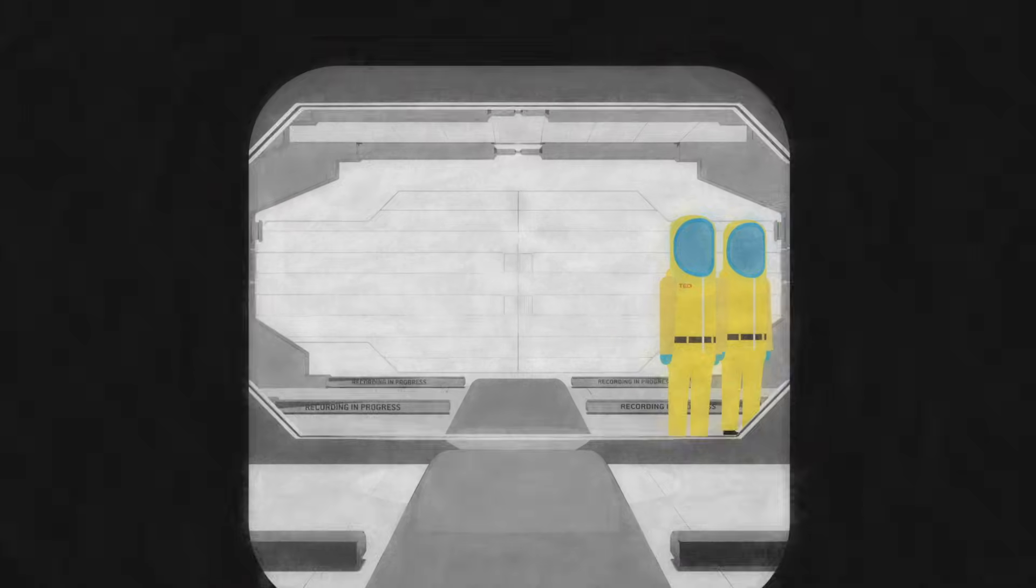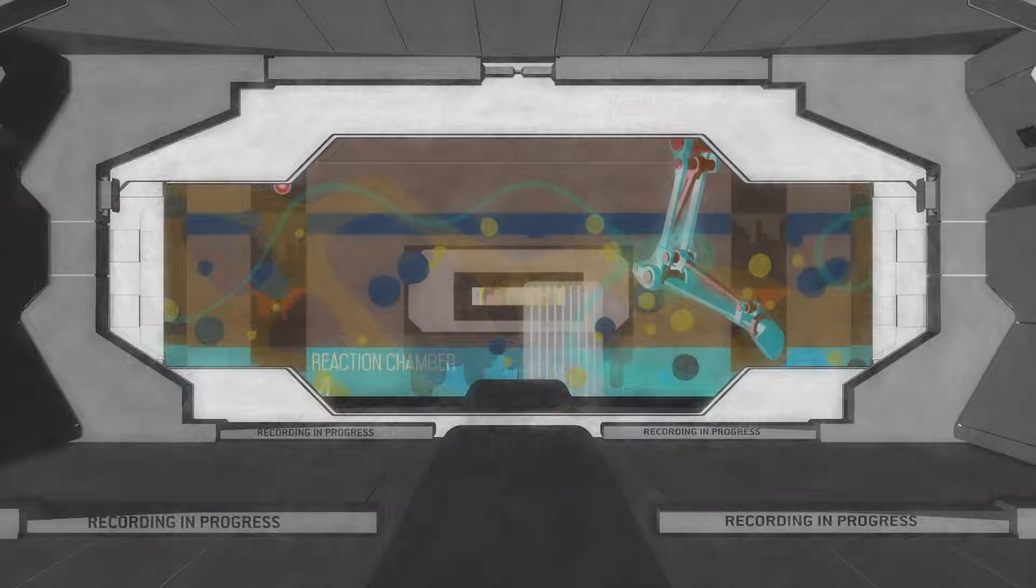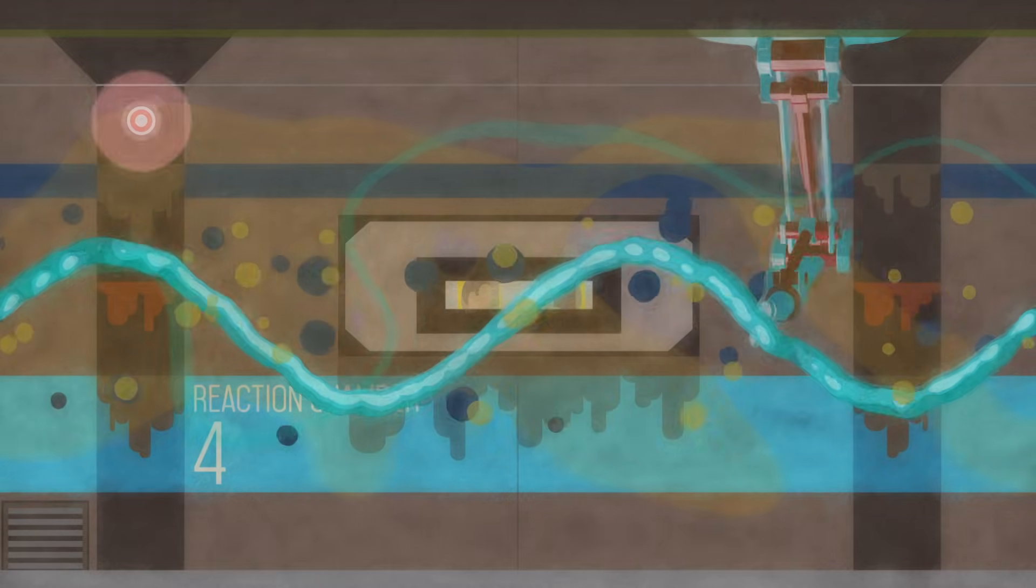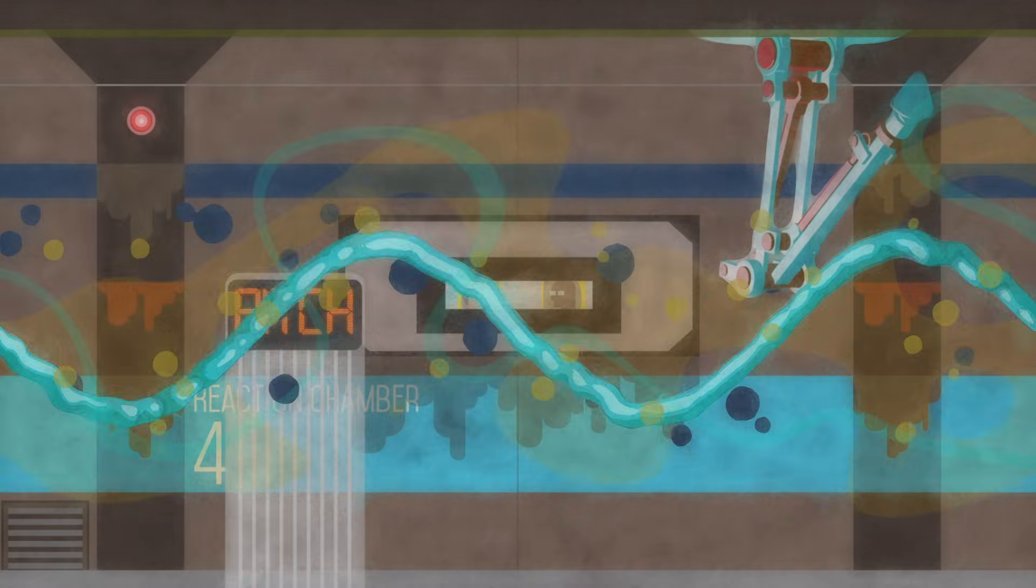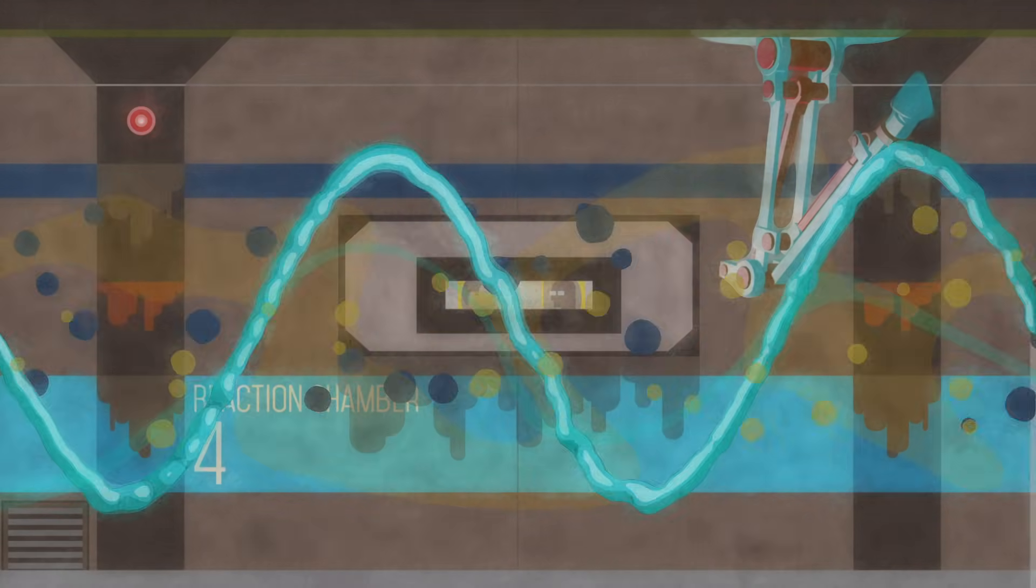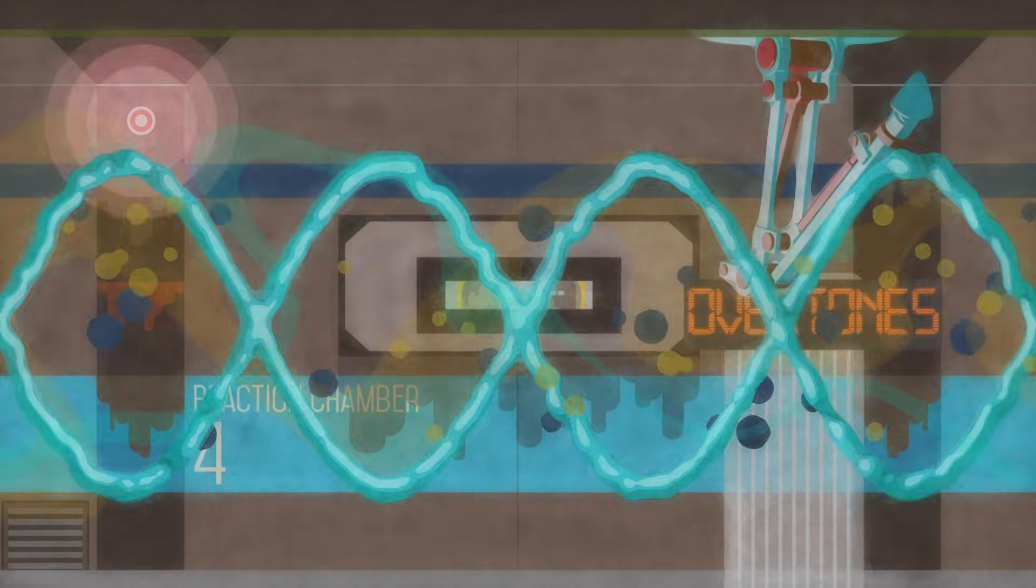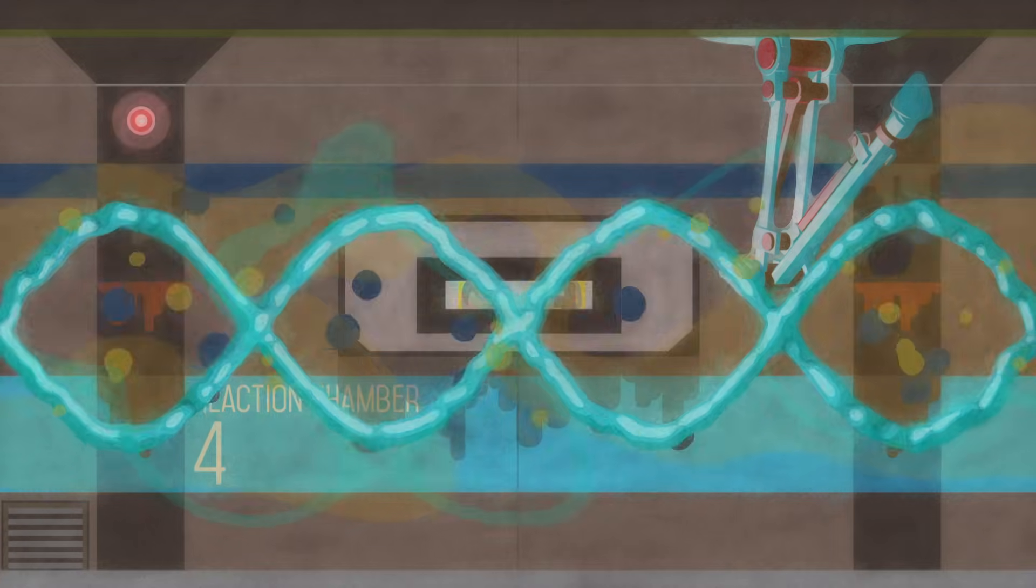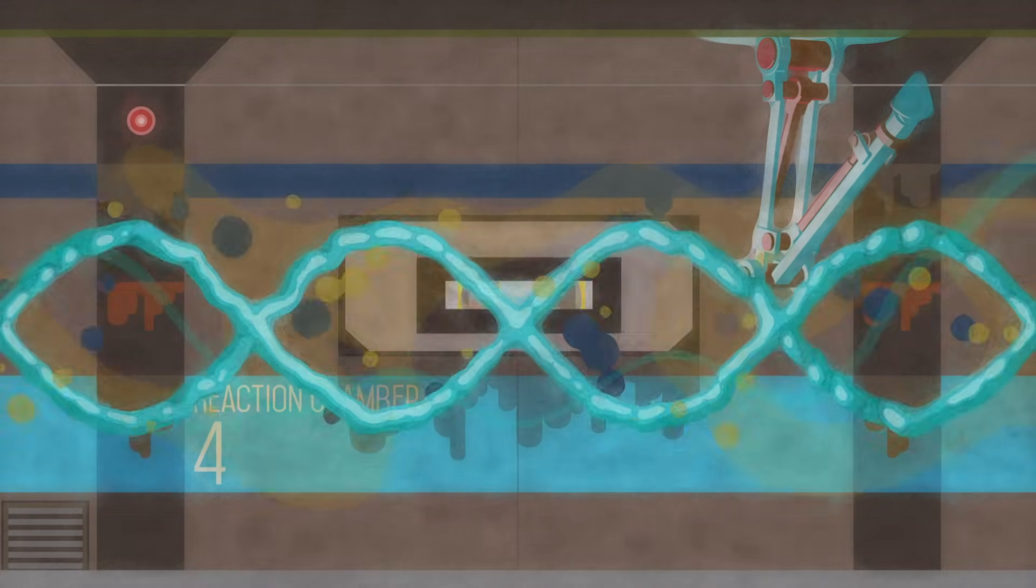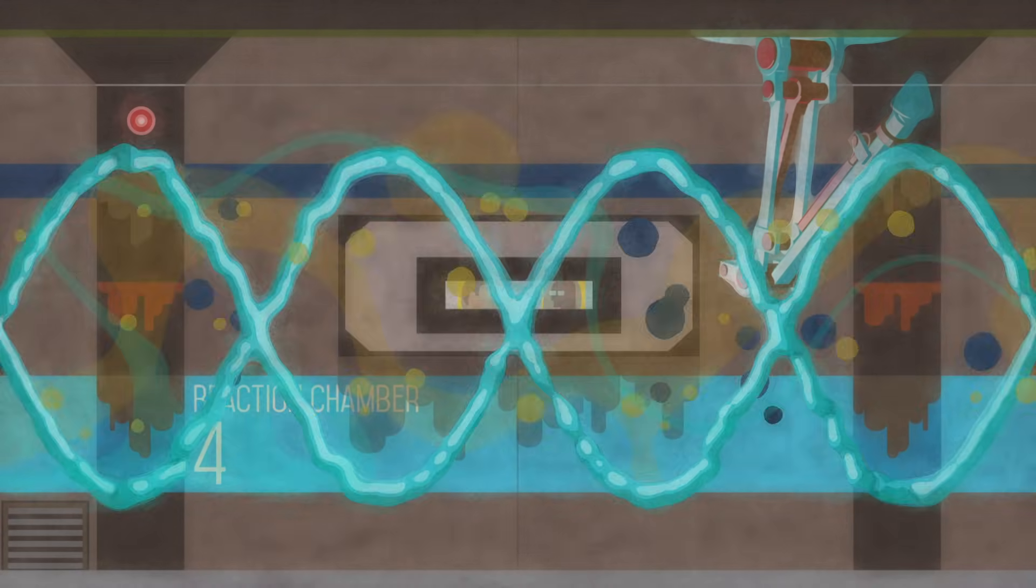Each time you pluck a string, you actually create several standing waves. There's the first fundamental wave, which determines the pitch of the note, but there are also waves called overtones, whose frequencies are multiples of the first one. All these standing waves combine to form a complex wave with a rich sound.